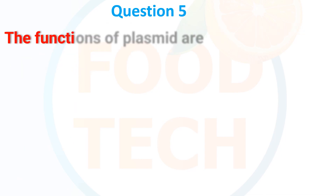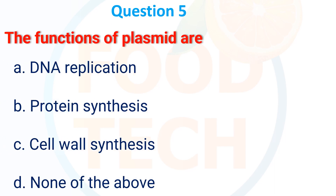The function of plasmids are: A. DNA replication, B. Protein synthesis, C. Cell wall synthesis, D. None of the above. The answer is D: None of the above.